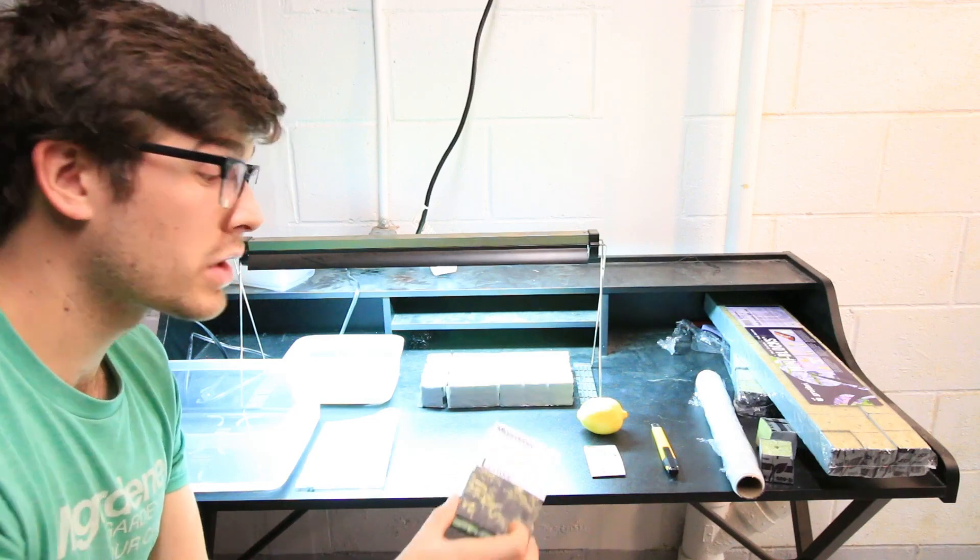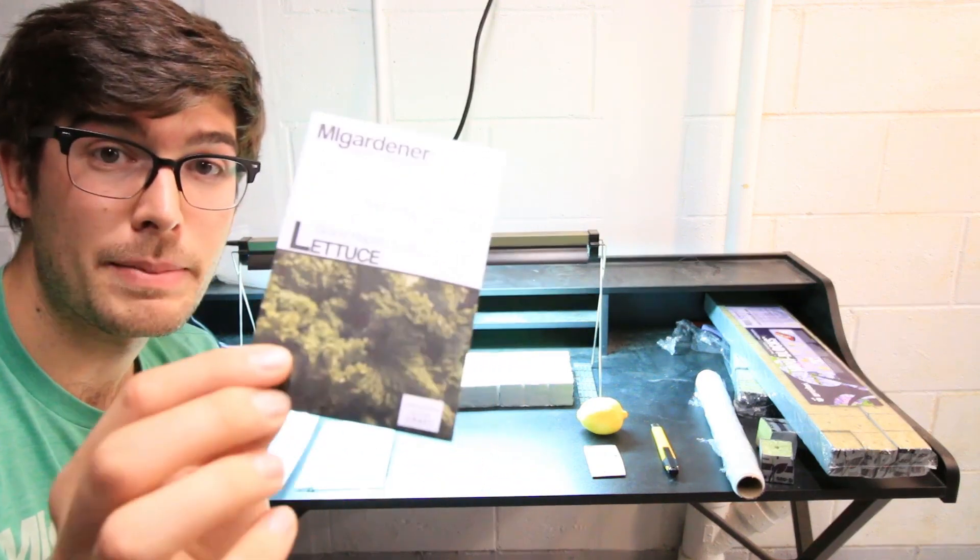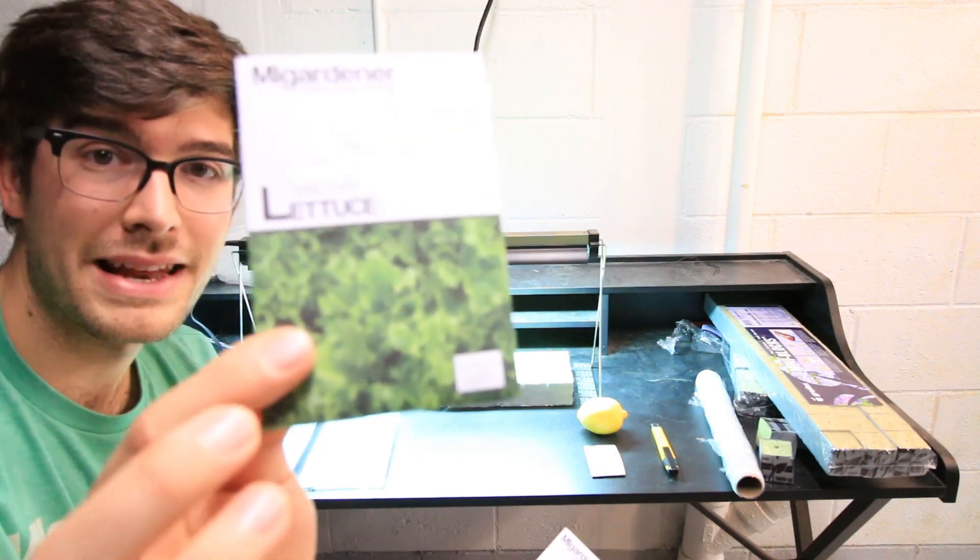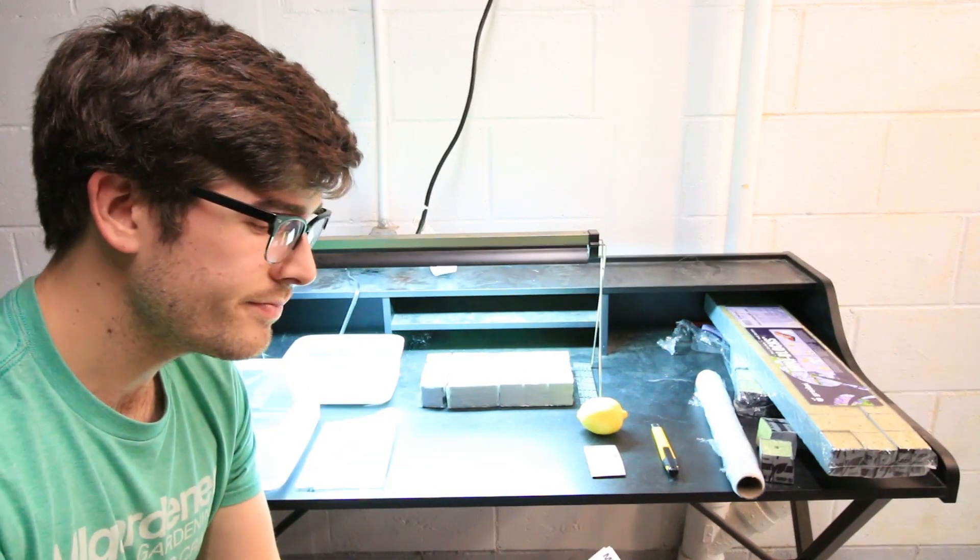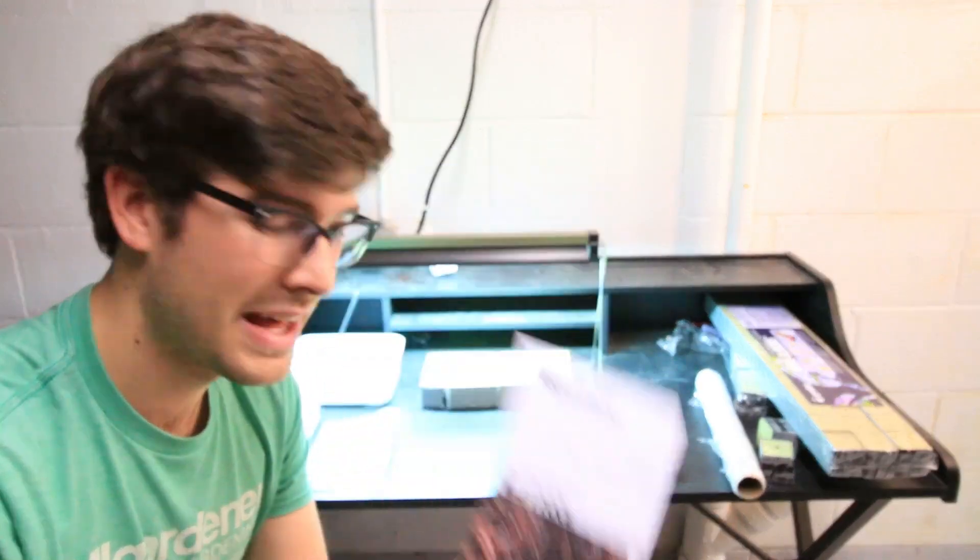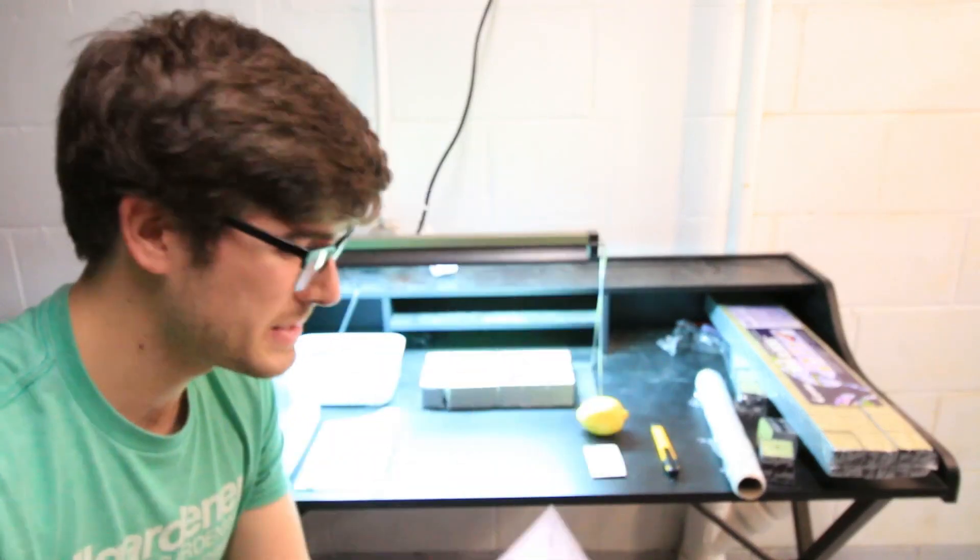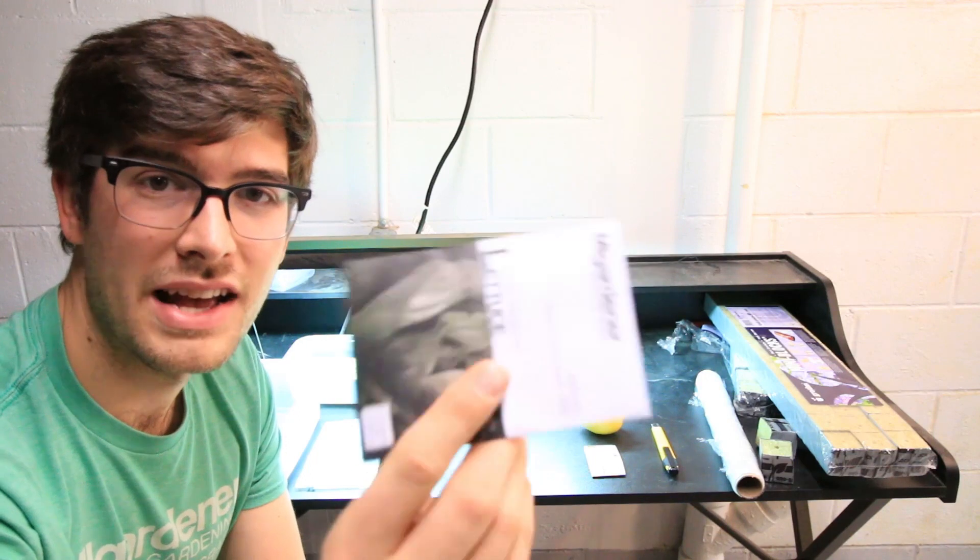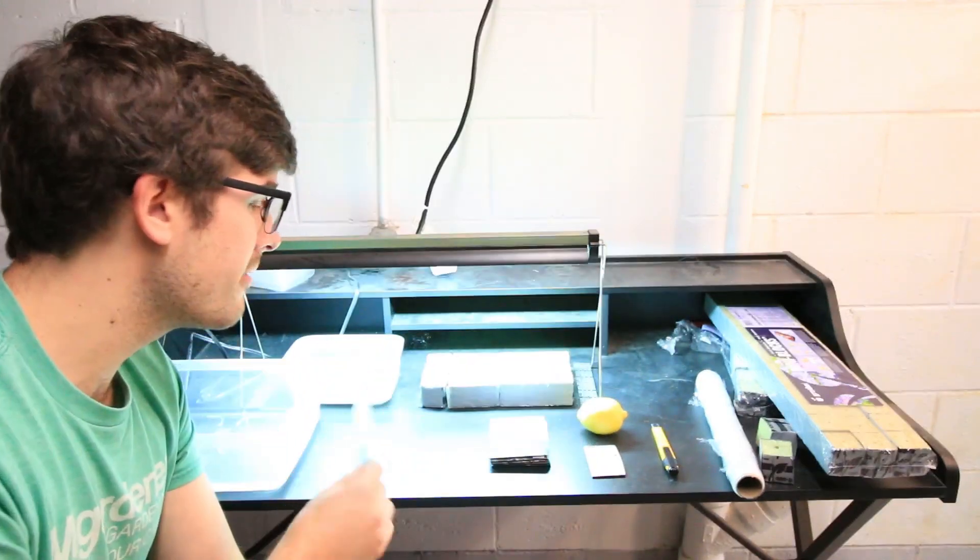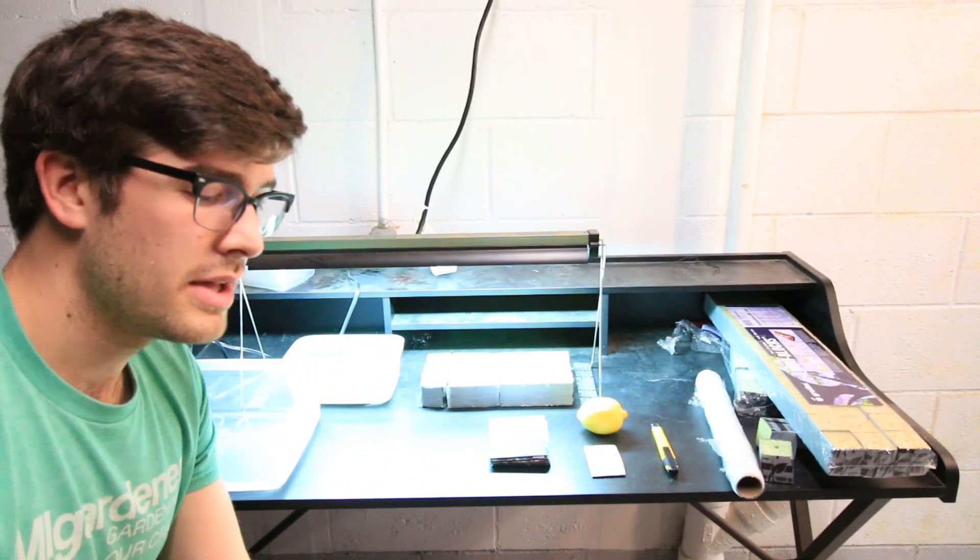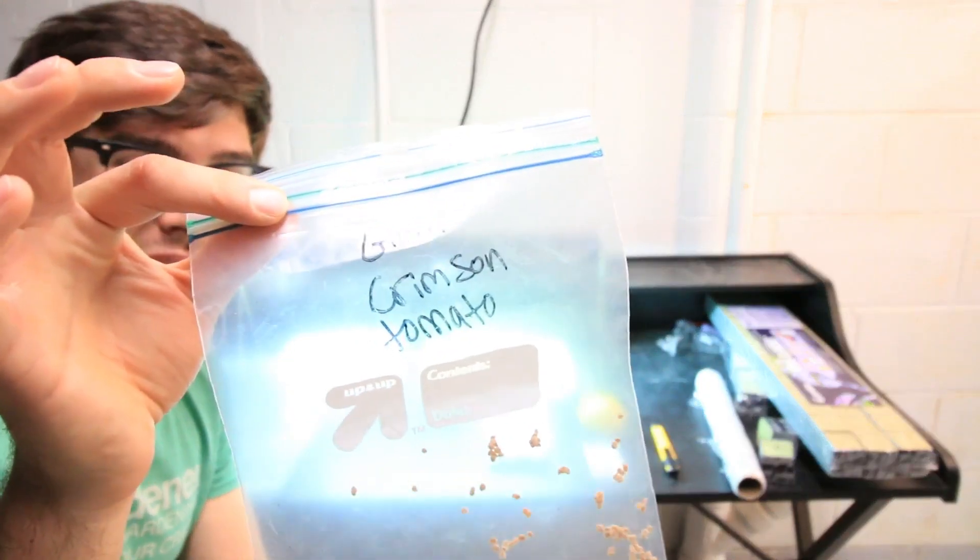When it comes to the lettuce, we're going to be starting Grand Rapids leaf lettuce, Tango leaf lettuce, Red Sails lettuce, Great Lakes 118 lettuce, and Paris Island cos lettuce. And then finally, we're going to be growing the giant crimson tomato.